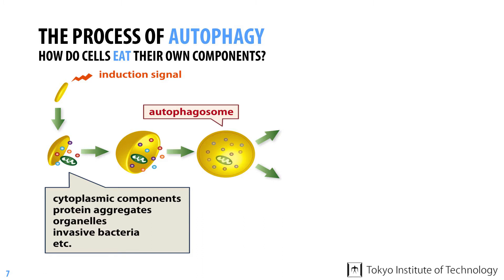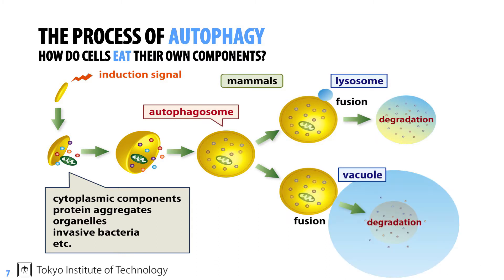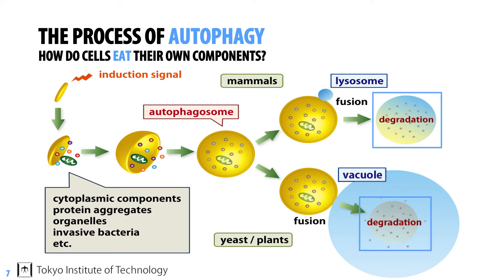In this process, various cellular constituents are sequestered into these vesicles, which are called autophagosomes. The autophagosome then fuses with a lysosome in mammalian cells, or a vacuole in yeast and plant cells. Since lysosomes and vacuoles contain a number of degradation enzymes, the contents of the autophagosome are degraded after fusion with these organelles. We often compare the autophagosome to a garbage truck that collects and transports waste, while the lysosome and vacuole can be thought of as a disassembly or recycling plant.